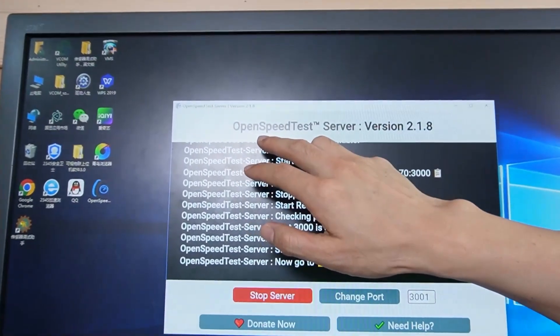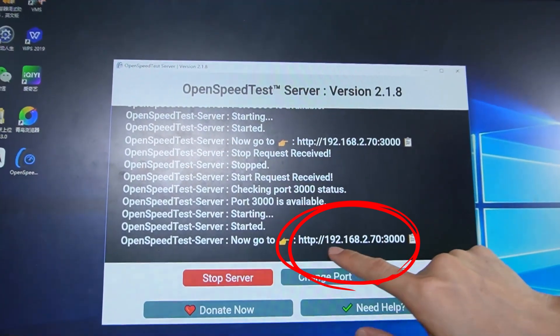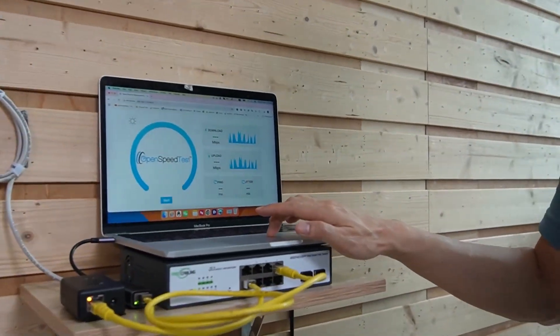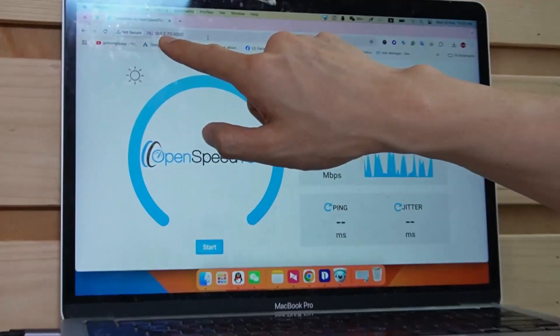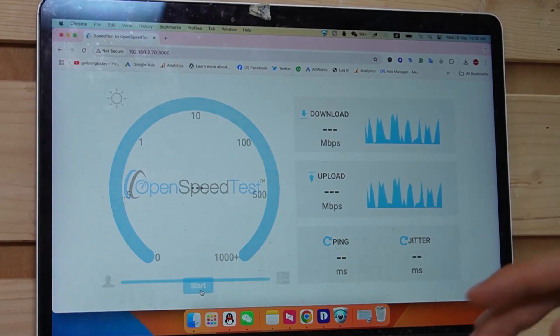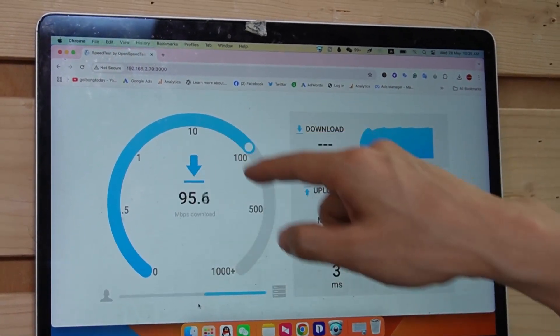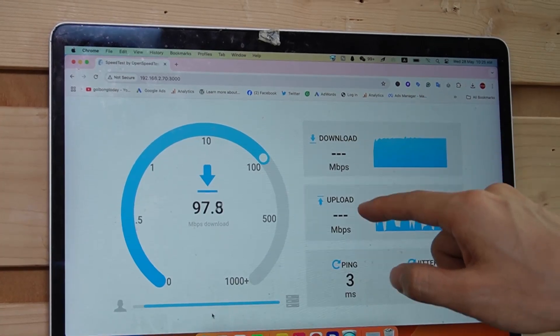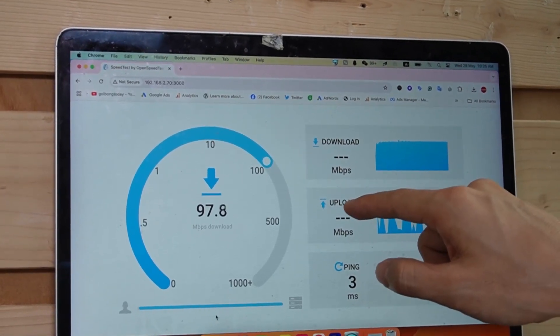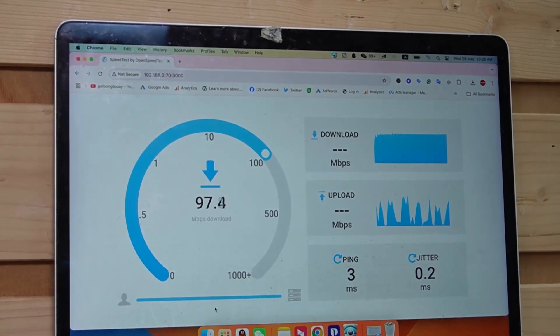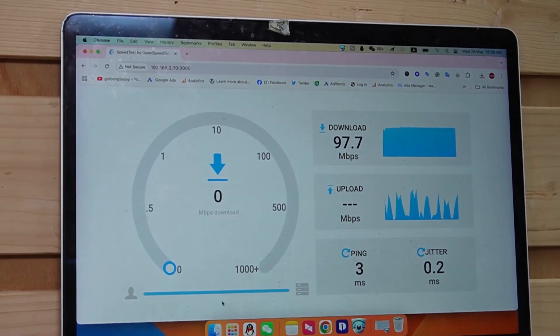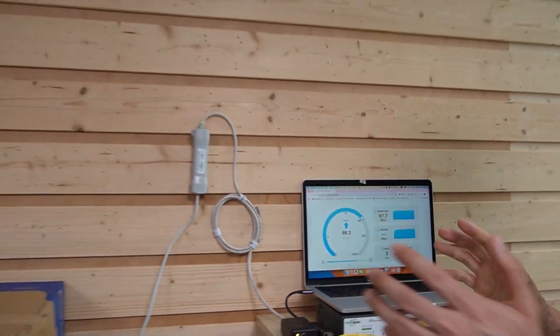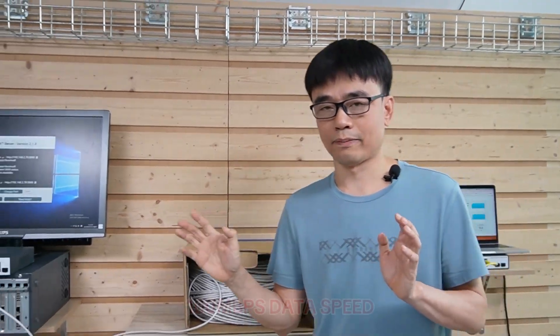Now let's take a look at the server. The server is running the software OpenSpeedTester server. This is the IP address of this server. Now let's move to the barn. Let's refresh the link. This is the IP address of the server. Let's hit start. Now we are seeing about 100 megabits per second speed. The client is testing the download speed. After you complete the download speed test, it will start testing the upload speed. We have seen about the same speed for uploading. So between these two locations, we have about 100 megabits per second speed.